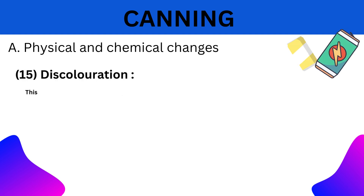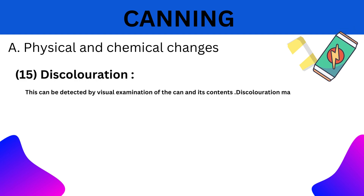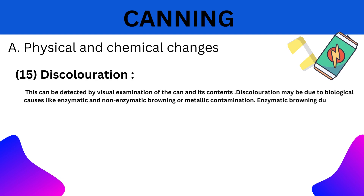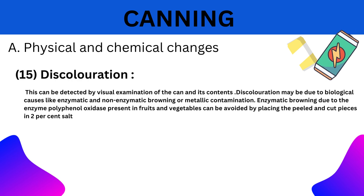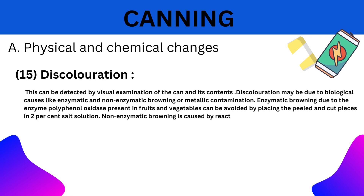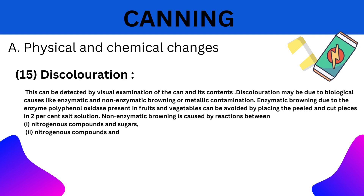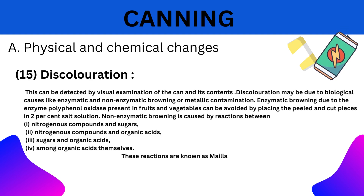15. Discolouration: This can be detected by visual examination of the cans and their contents. Discolouration may be due to biological causes like enzymatic or non-enzymatic browning, or metallic contamination. Enzymatic browning is due to the enzyme polyphenol oxidase present in fruits and vegetables, and can be avoided by placing peeled and cut pieces into 2% salt solution. Non-enzymatic browning is caused by reactions between nitrogenous compounds and sugars, nitrogenous compounds and organic acids, sugars and organic acids, or among organic acids themselves.